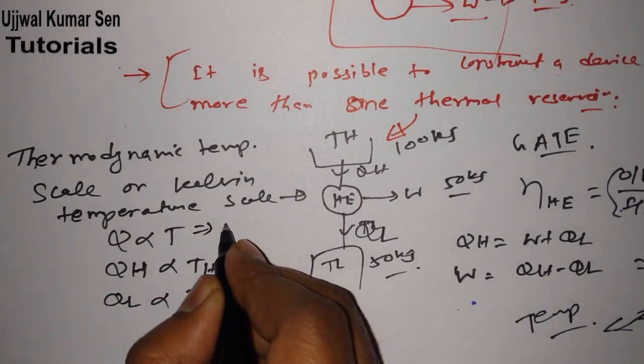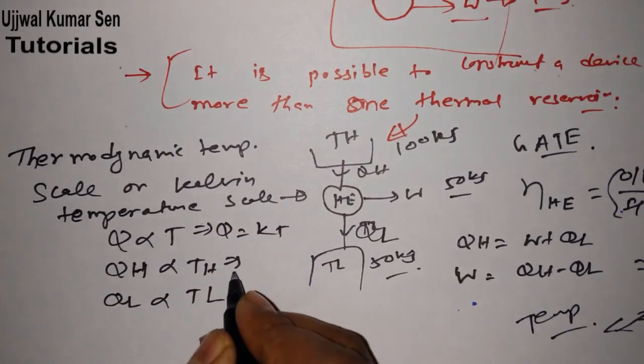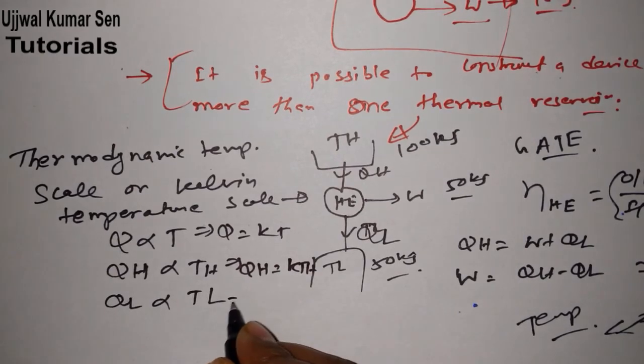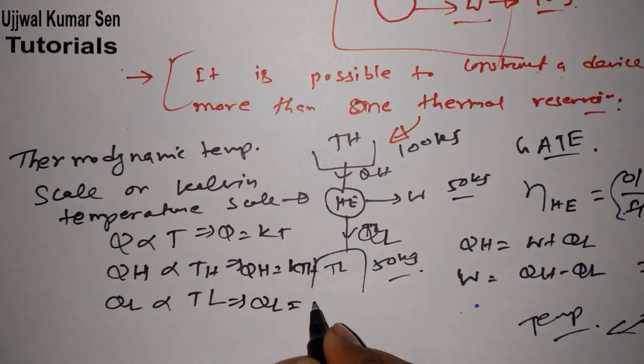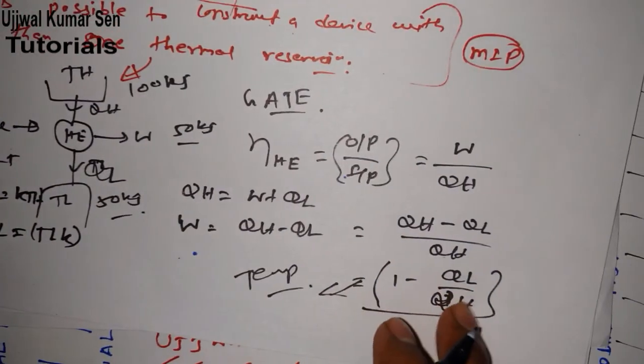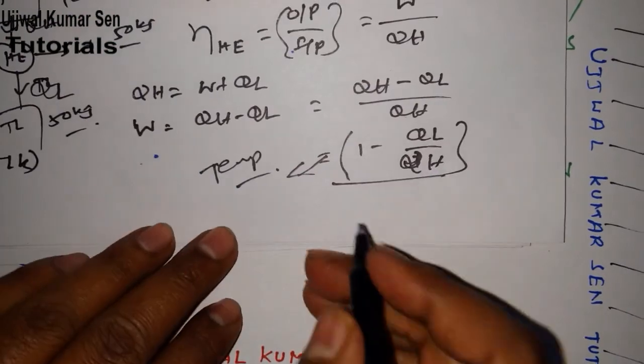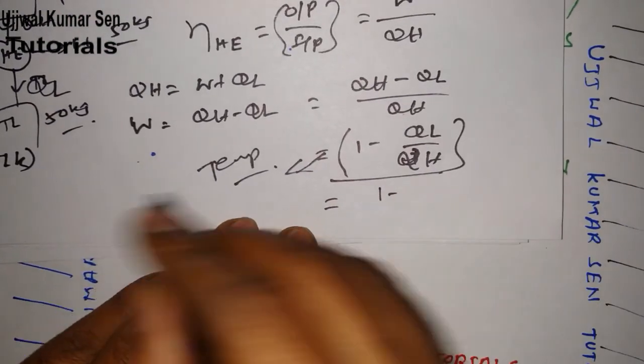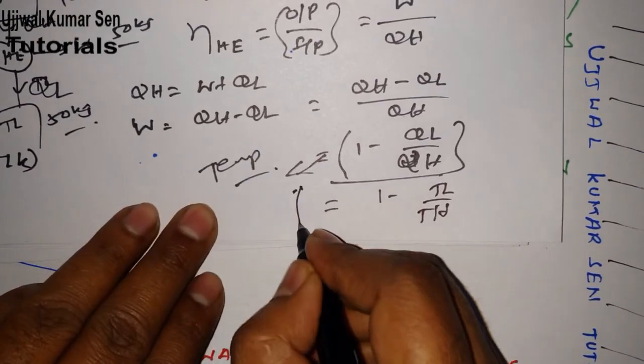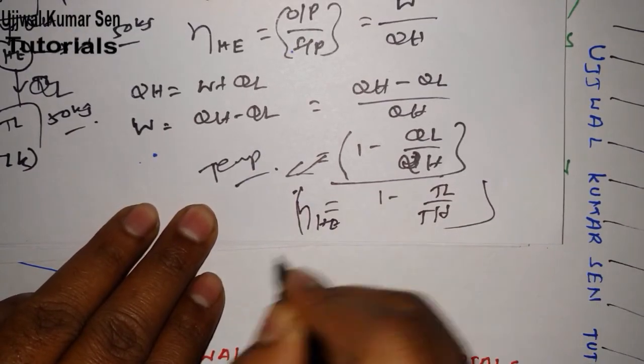Therefore QH is directly proportional to TH and QL is directly proportional to TL. Therefore we can write Q equals KT. From here we can write QH equals KTH and from here we can write QL equals TLK. Now put these values here. What we are going to get? 1 minus T, T will get cancelled, so TL by TH, efficiency of this engine.